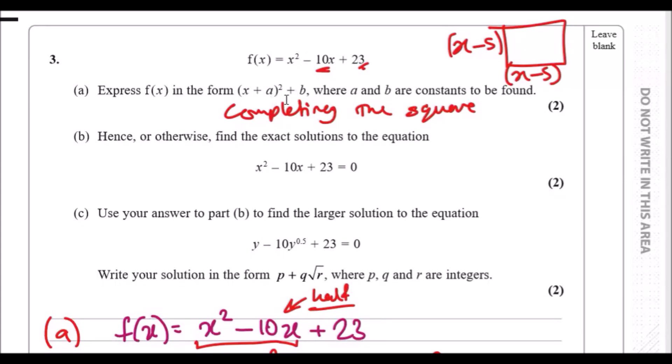We've got x plus a all squared plus b. Now if you haven't seen this before, this is known as completing the square and it's super easy. You literally have to think of a perfect square and two numbers are multiplied which will give us at least the first two terms x squared minus 10x.